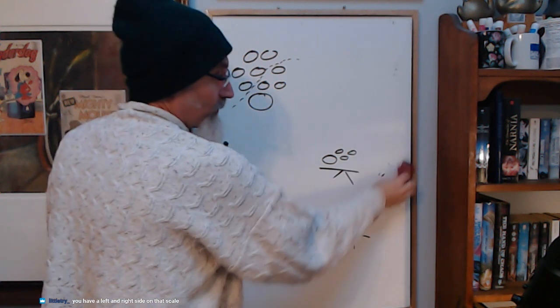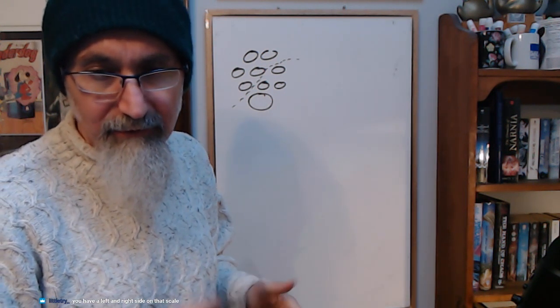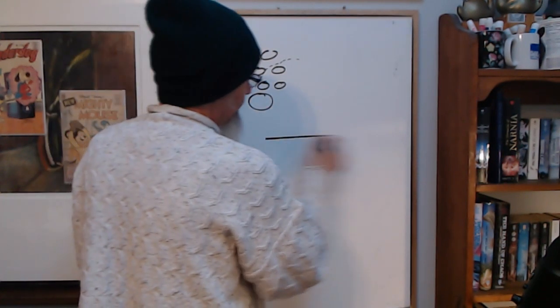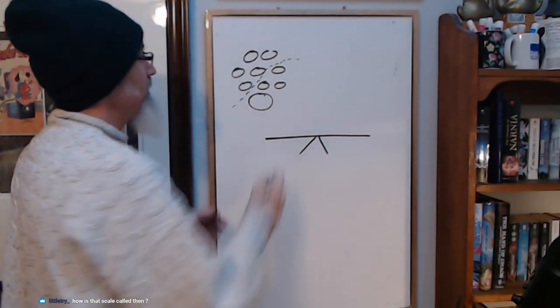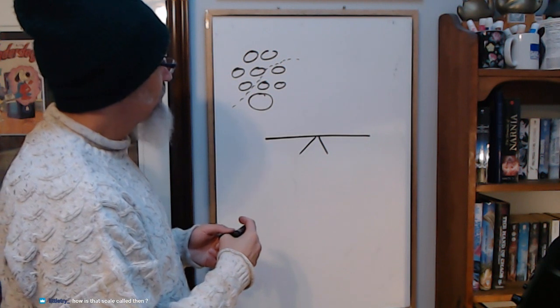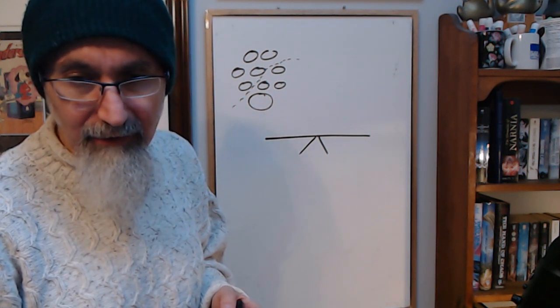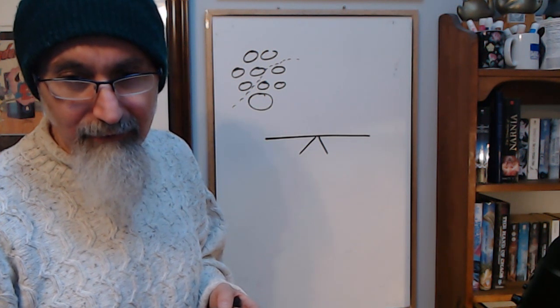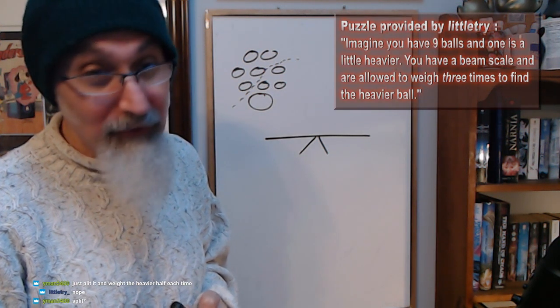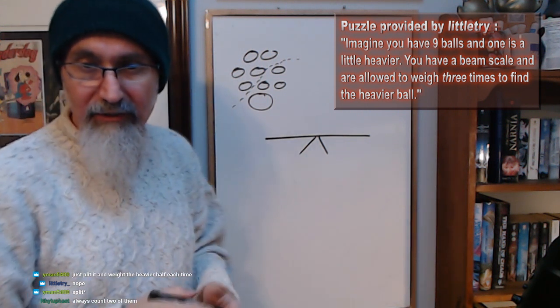So that one we could do with four weigh-ins, pretty sure. When does calculus turn to physics? Mathematics is just the language-based language of everything. It's a beam scale, that's not what you call them. So we got this guy, so we got nine balls. So what are we gonna do? Nine balls, so what would we do? Do we have to have all nine balls on the beam scale at the same time? You have a left and a right side of that scale.